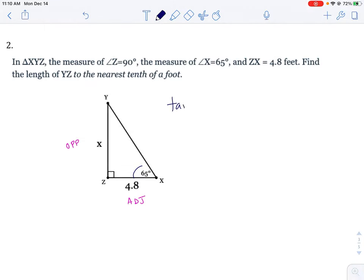Opposite and adjacent is the tangent function. Now I'm going fairly quickly because this is a video. Please pause it or rewind if there's a problem. I'm writing tan of 65 is x over 4.8. If I cross multiply, x would be 4.8 tan of 65.